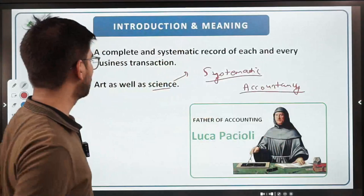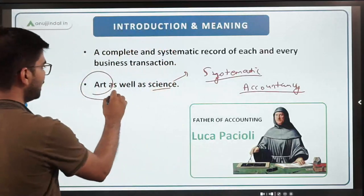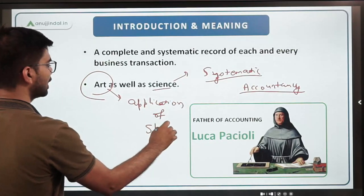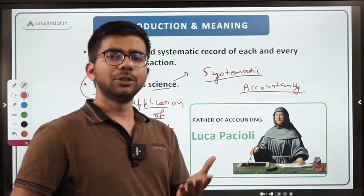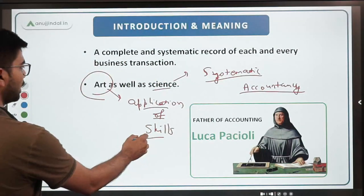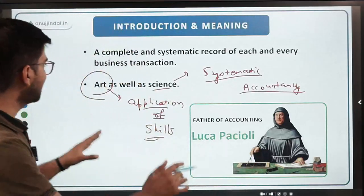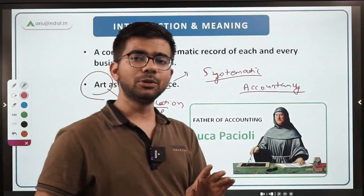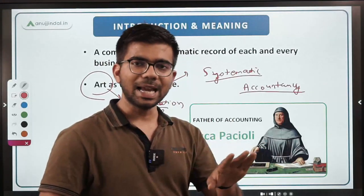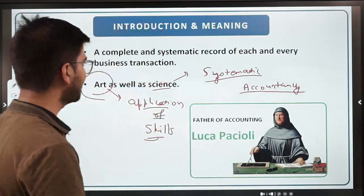Why is accounting called an art? Art is basically the application of skills — when you apply your skills, that is called art. For example, various teachers have a different way and style of teaching — that is called an art. Similarly, different accountants or chartered accountants use different styles and different methods of analysis. The information is the same, but analysis will be done differently by different people. That is why accounting is both an art as well as a science.